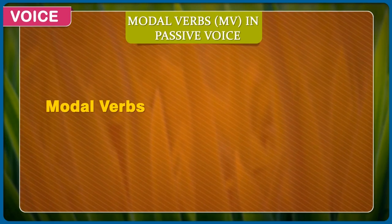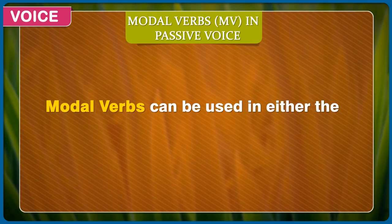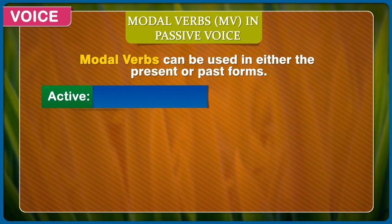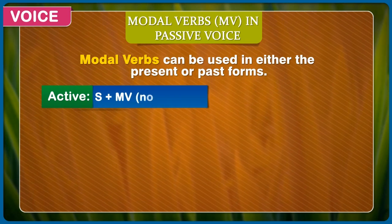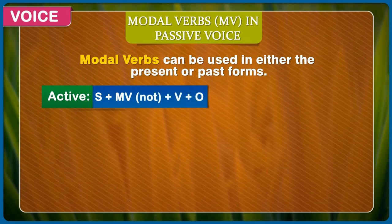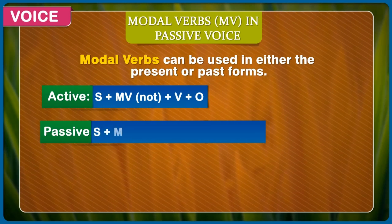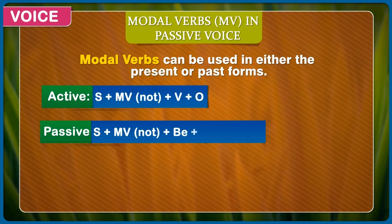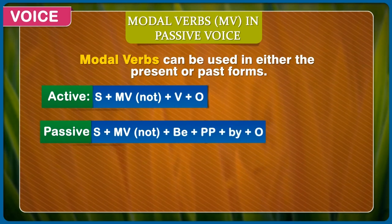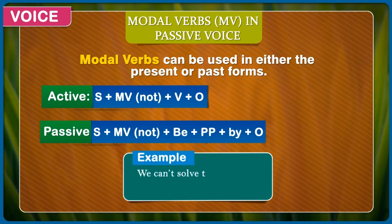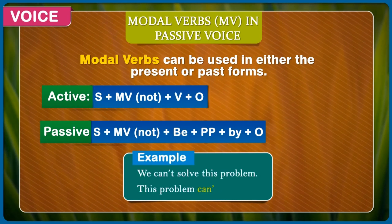Modal verbs in passive voice. Modal verbs can be used in either the present or the past forms. Active: subject + modal verb (not) + verb + object. Passive: subject + modal verb (not) + be + past participle + by + object. Example: We can't solve this problem. This problem can't be solved.